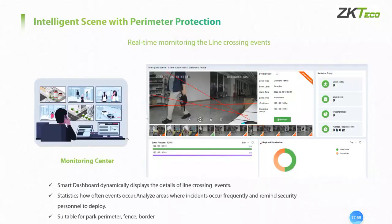The next is about intelligent scene perimeter protection. The cross-border function of intelligent video means that if someone crosses the defined line, there will be an alarm. It can dynamically present all cross-line information. This is more suitable for places like parks, perimeters, and borders.